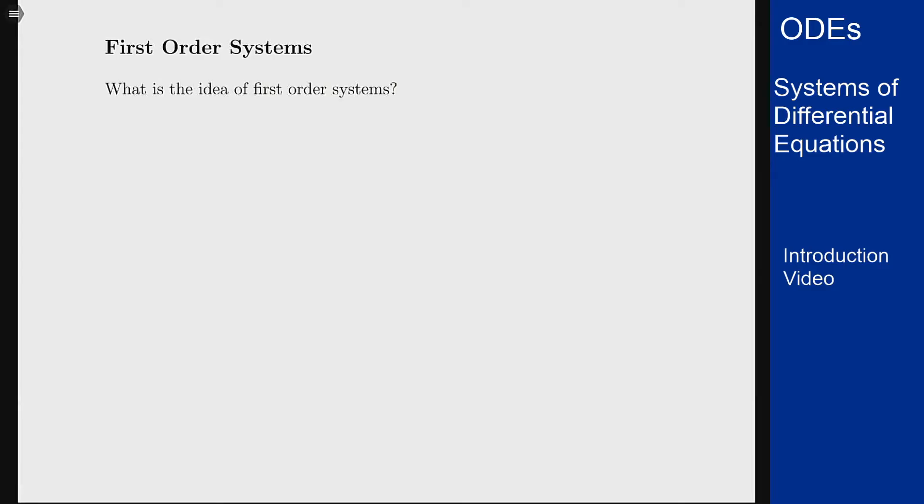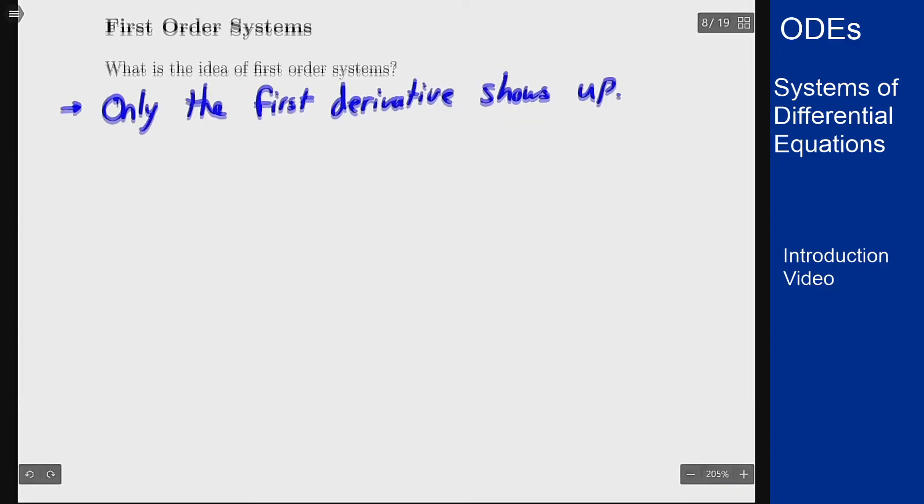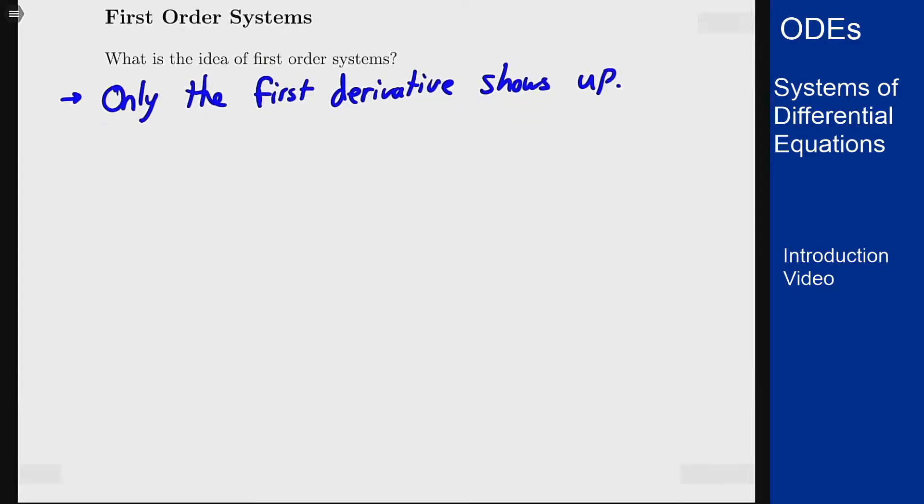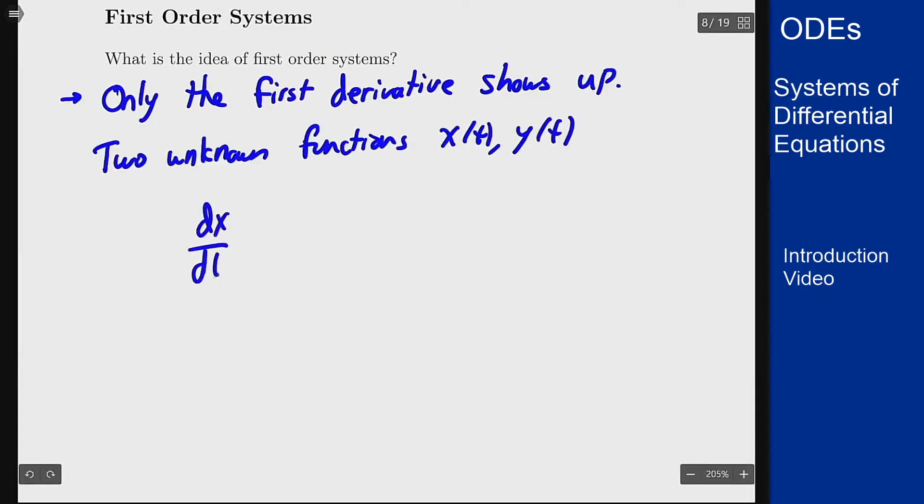A first order system means that only the first derivative shows up in the system of equations, but we can have multiple functions involved here. For instance, if I have two unknown functions we'll call them x and y, the first order system might look like the derivative of x with respect to time is some function f of t, x, and y, and the derivative of y with respect to t is a function g of t, x, and y.